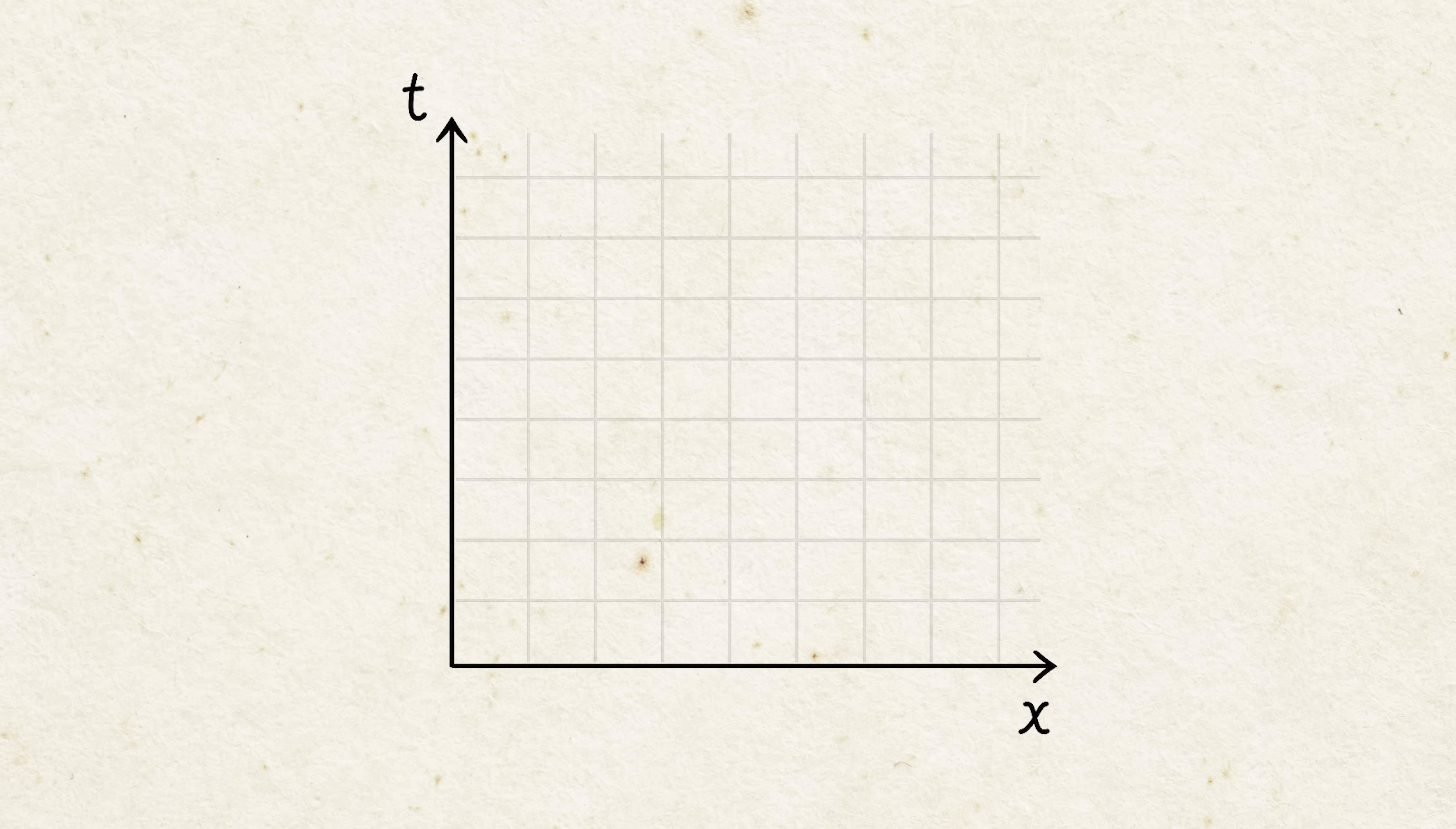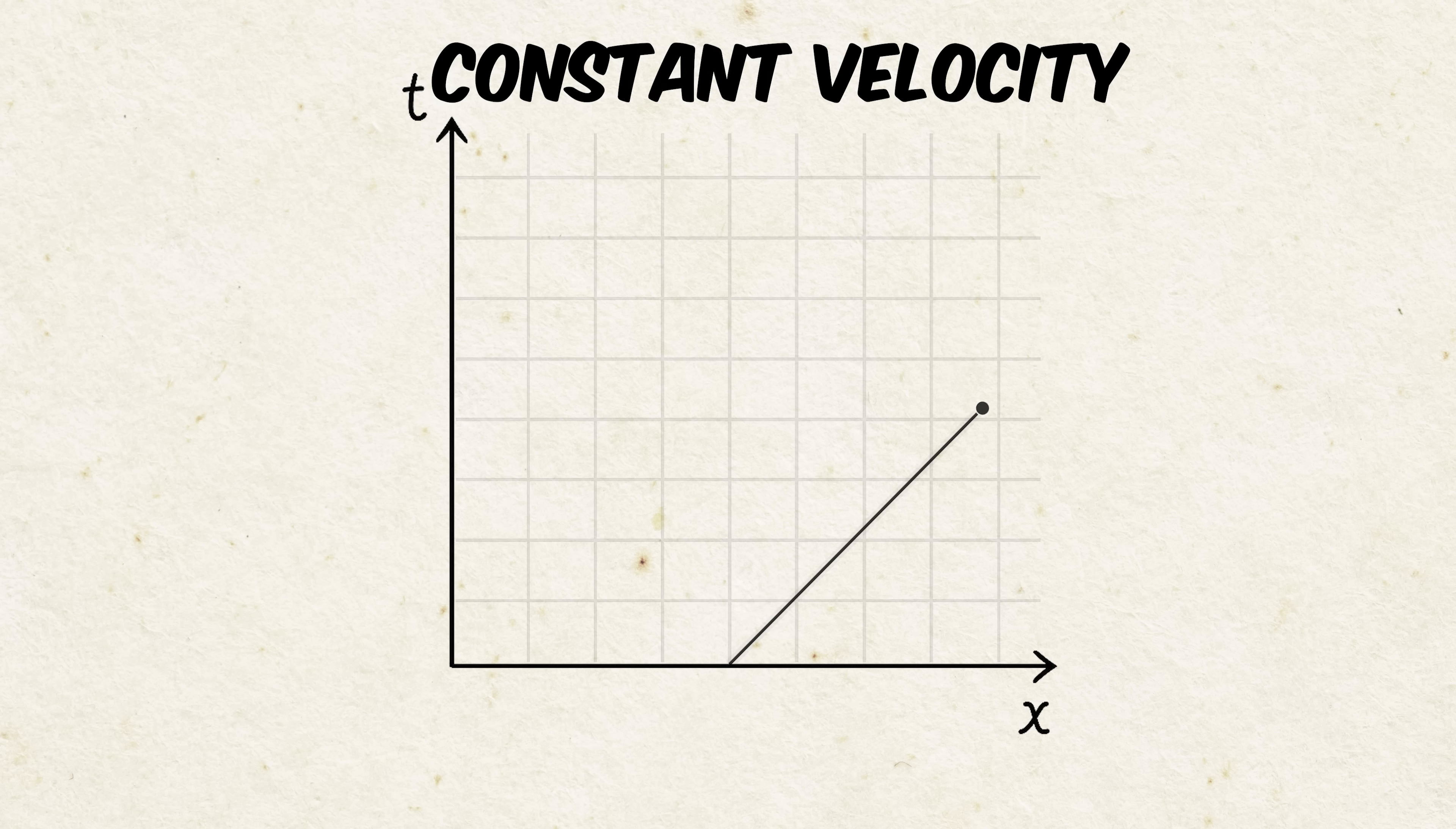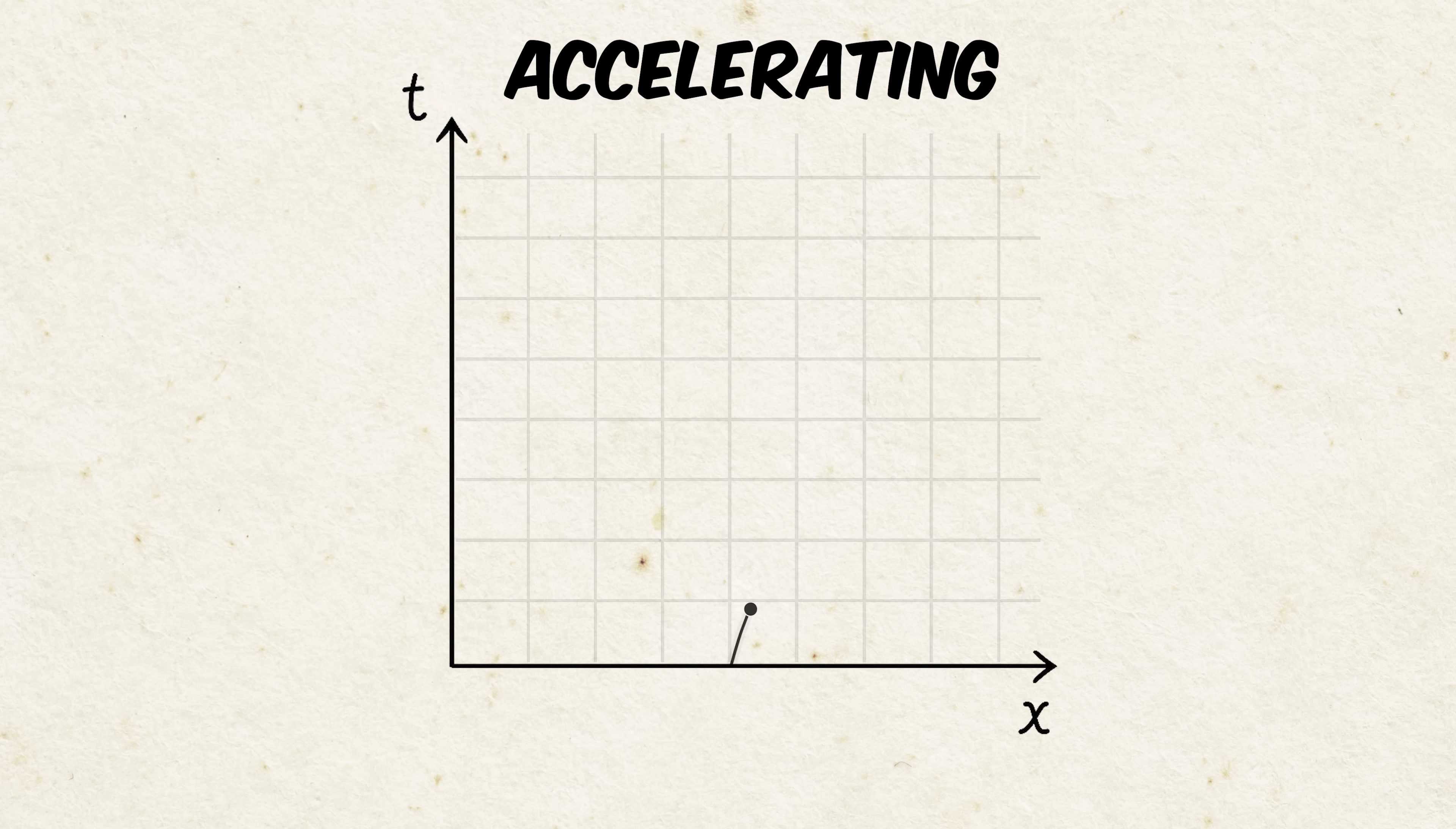If a person is just standing still with no velocity, then they'll move up in a straight line on this graph here. This is because they're only moving through time and not space. If they have a velocity, they'll be moving in a tilted straight line because they're always moving forward through time, but also through space. And then if they're accelerating, it'll look like a constant curvature.